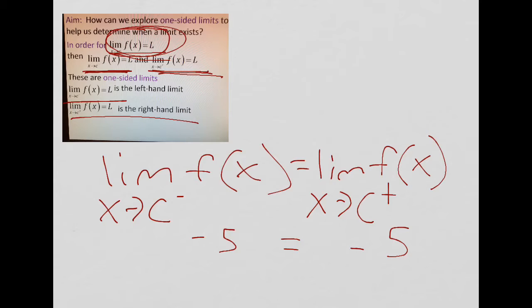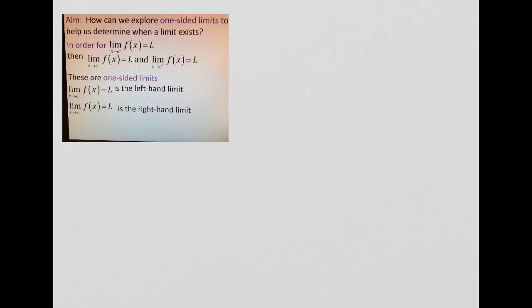So we're going to be taking a look at some example problems using this concept. Hopefully you had a chance to write this down. Let's take a look at those example problems. For the first one, they ask you to find the limit of h of t as t approaches 0, and they give you a piecewise function for h of t. We want to find our limit by evaluating our one-sided limits.